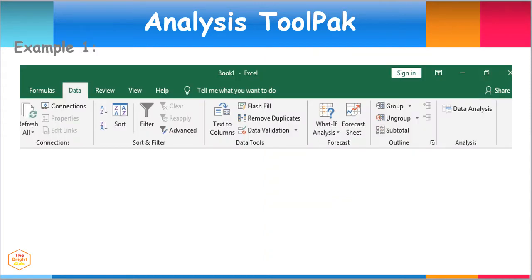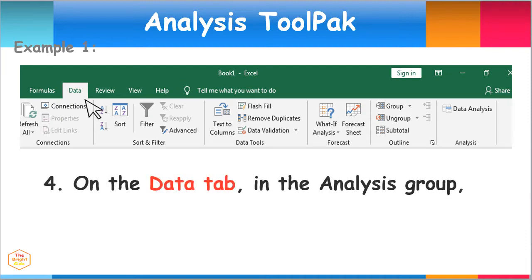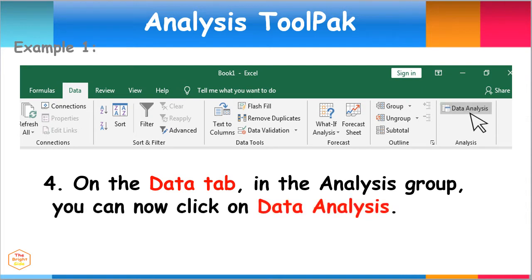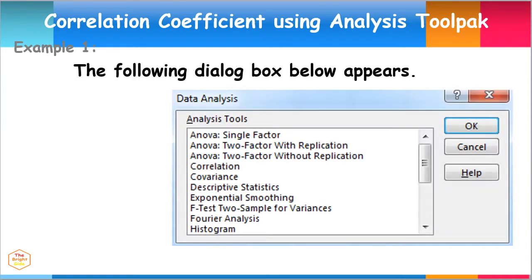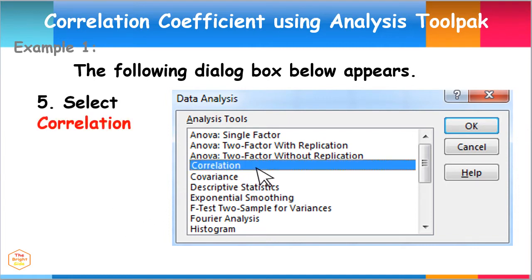Now that the Tool Pack has been added, you may click on the Data tab menu. Then in the Analysis group found in the far right side of the menu, you can now click on the Data Analysis tab. After selecting the Data Analysis tab, the following dialog box appears. From the choices of different analysis tools, select Correlation. Then click OK.